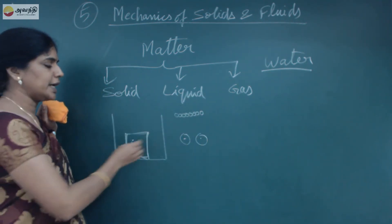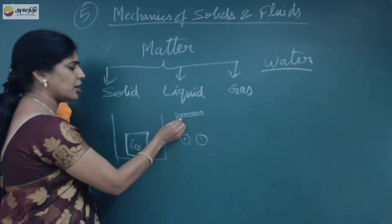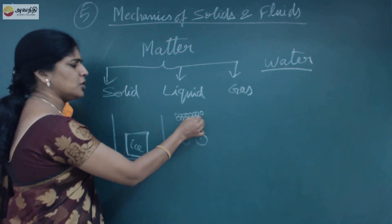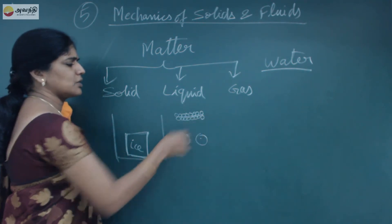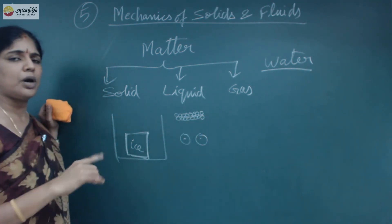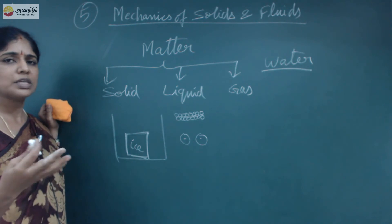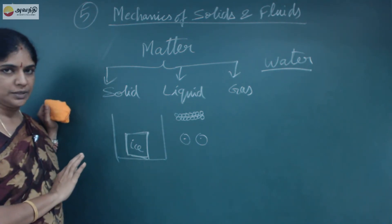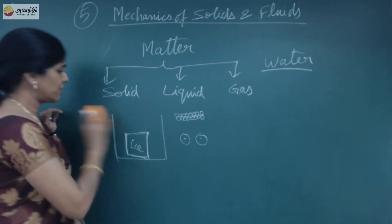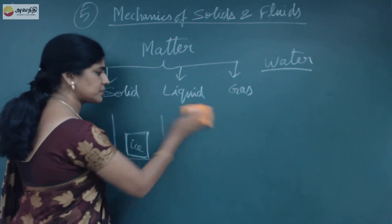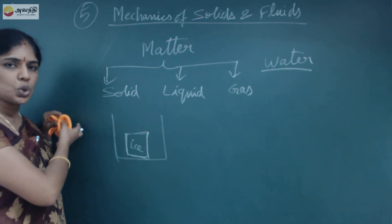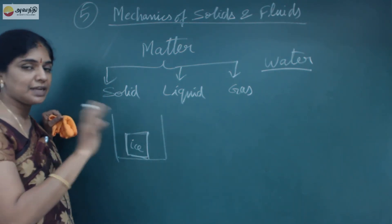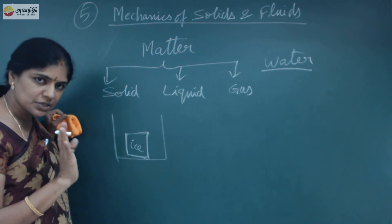In a solid, all atoms will be very tightly packed with very little space between them. There will be virtually no distance between the two atoms or two molecules — that is why we call it a solid.